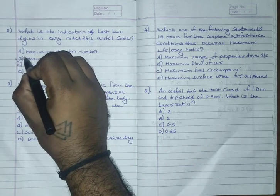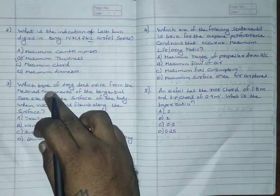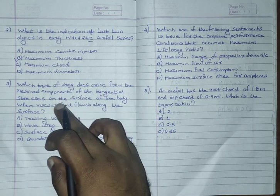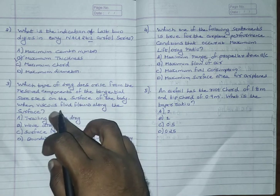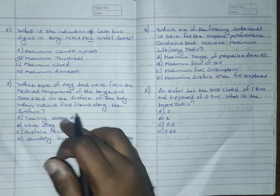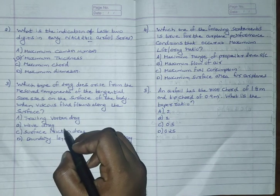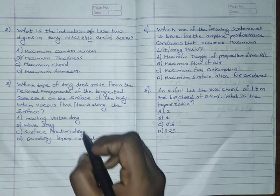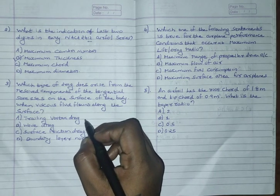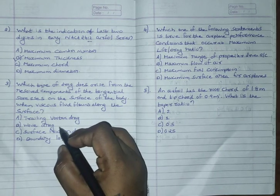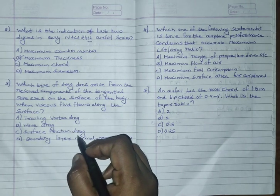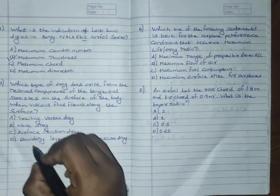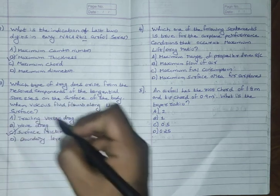Next question: which type of drag arises from the resolved components of tangential shear stress on the surface of the body in viscous fluid flows along the surface? The options are trailing vortex drag, wave drag, surface friction drag, and boundary layer normal pressure. The vortex drag is mainly due to the lift induced drag, and the wave drag is due to shock wave, and the friction drag is due to the surface friction, basically the tangential stress. So the correct answer is option C, the surface friction drag.